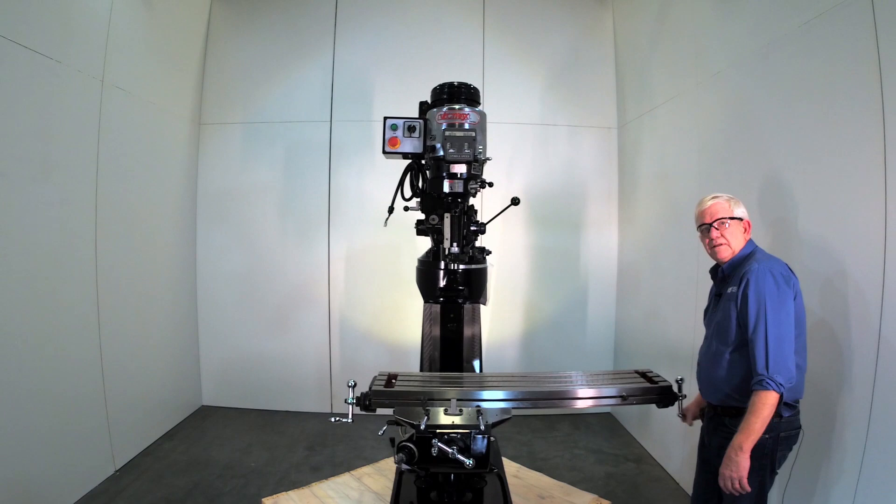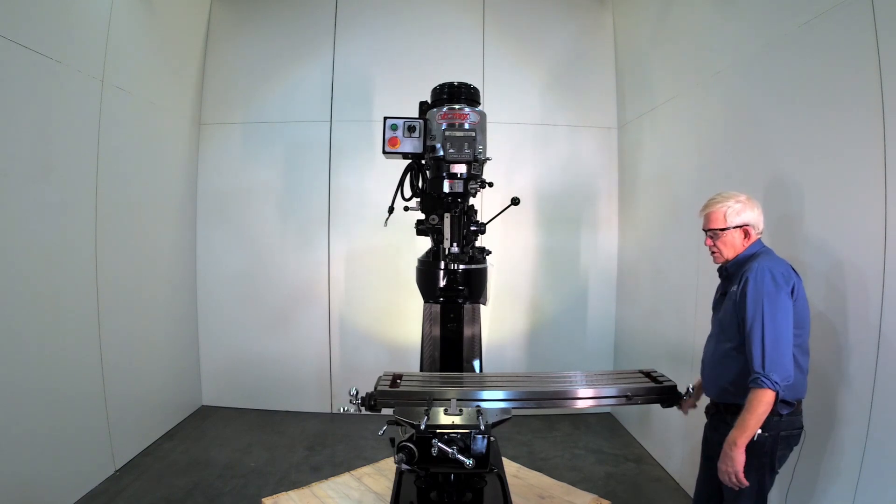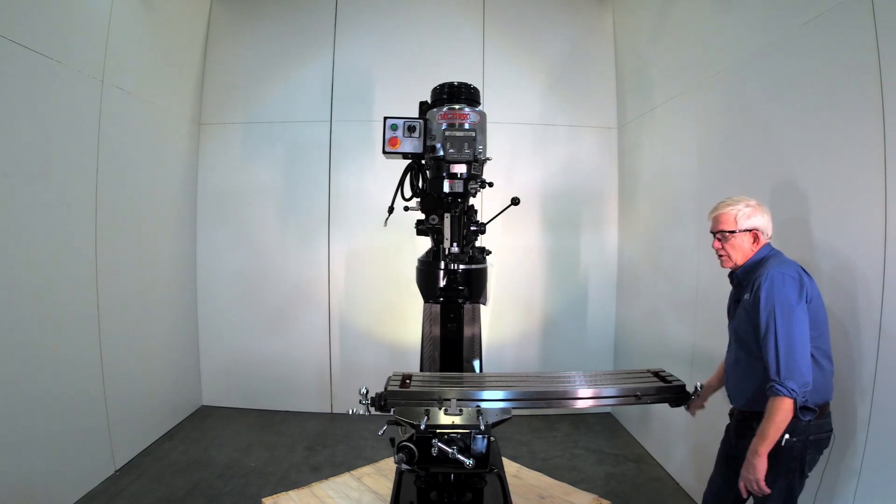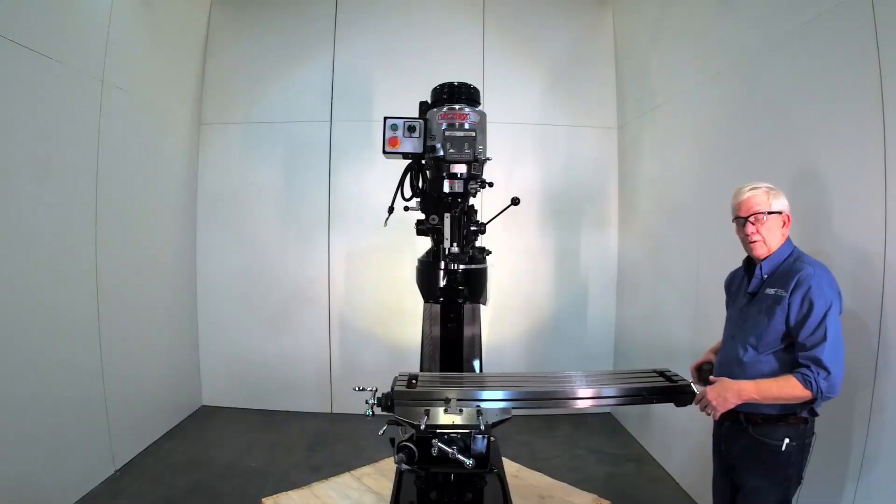Also remember that the stroke or the table size has nothing to do with the stroke of the DRO. Never just go by the table size as far as trying to obtain a DRO. Always use the measurement like we're going through now.